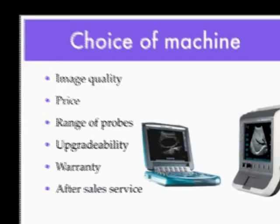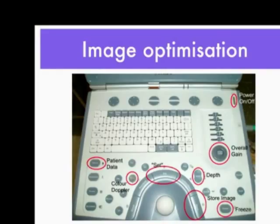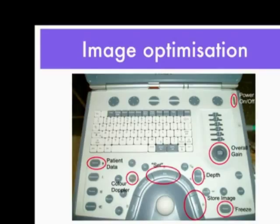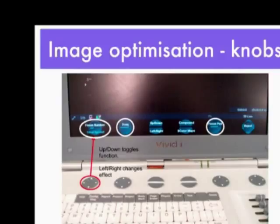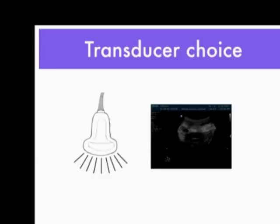There are two broad areas in which we can optimize images: changing the settings on the machine, or changing transducer manipulation. Important buttons include colour Doppler, depth, gain, frequency, and focal position. On some machines the focal point and frequency are set algorithmically and cannot be numerically adjusted. The single most important choice when you go to do a procedure is what transducer to use — this will most influence the type of image and the success of the procedure.